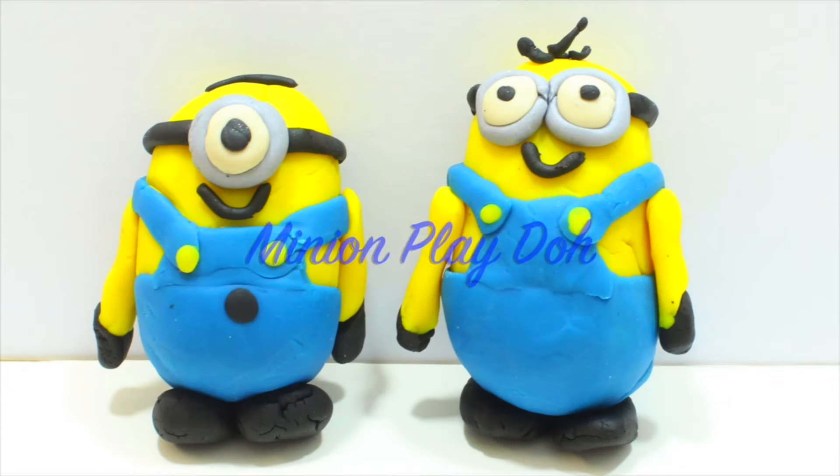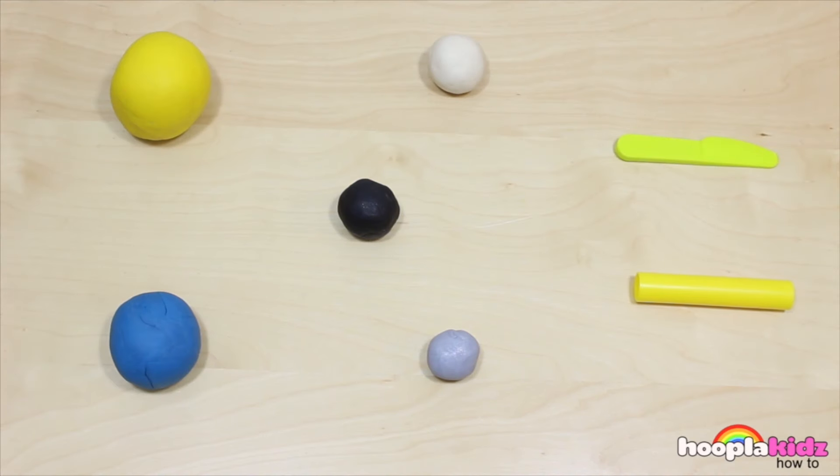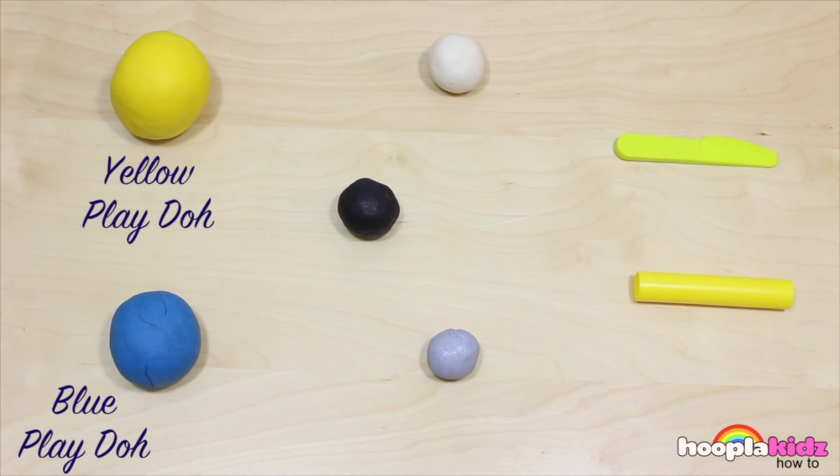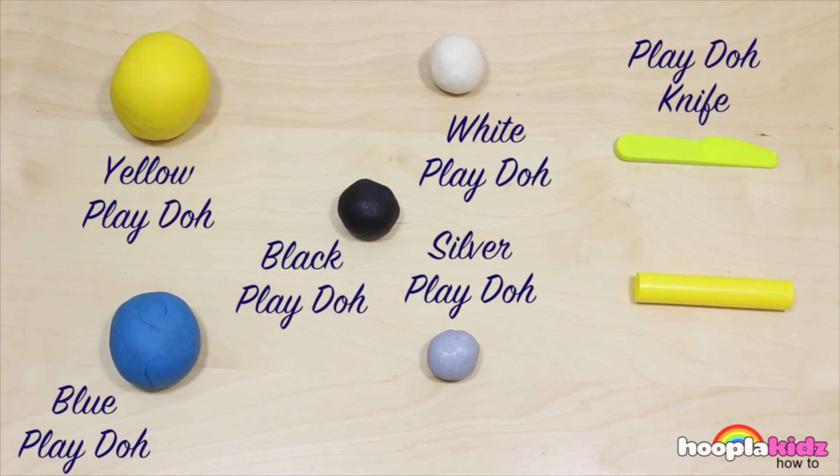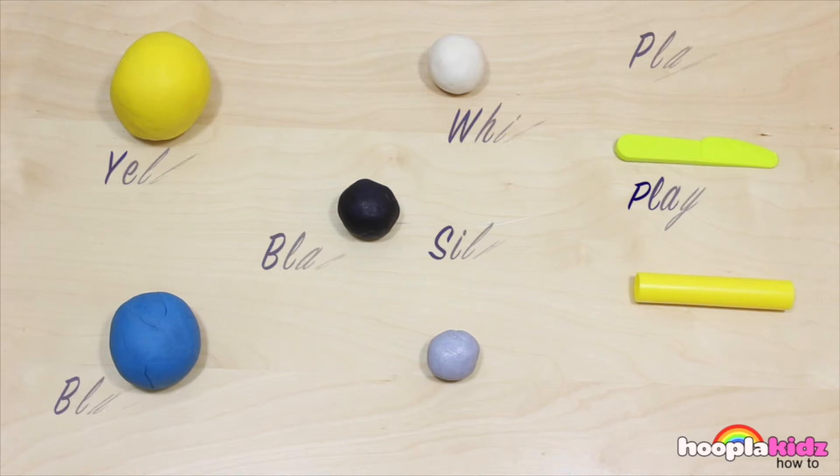Today I'm going to show you how to make the most adorable Minion Play-Doh. Don't they look cute? So, for this you're going to need some yellow Play-Doh, blue Play-Doh, black Play-Doh, white Play-Doh, some silver Play-Doh, a Play-Doh knife, and a Play-Doh rolling pin. So let's get started!